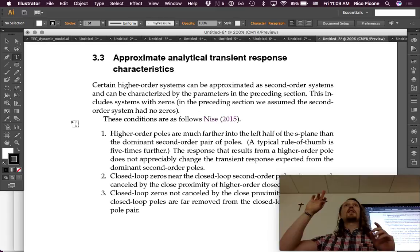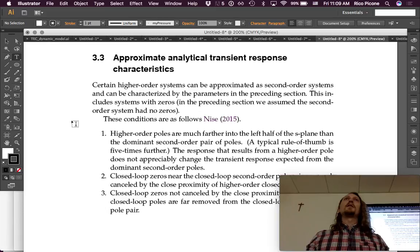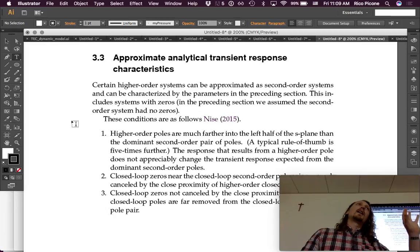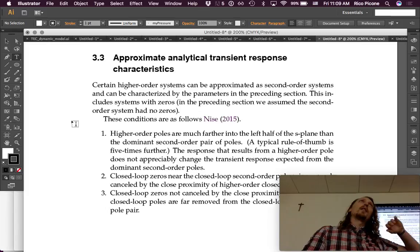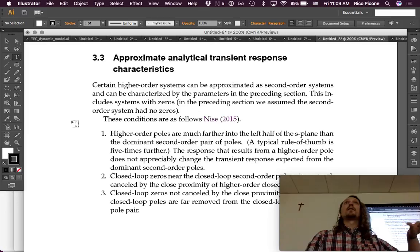And then, if there are two dominant poles that are close to, closer to the imaginary axis, then, even a very high-order system can be approximated as a second-order system. And the reason for that is that the poles that show up way out on the left,